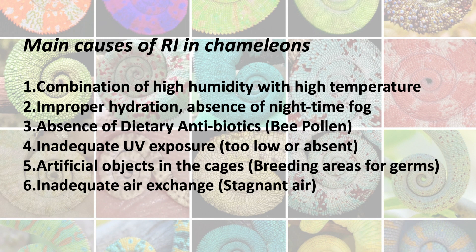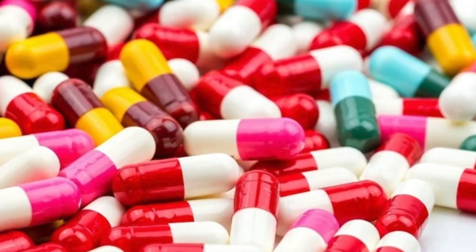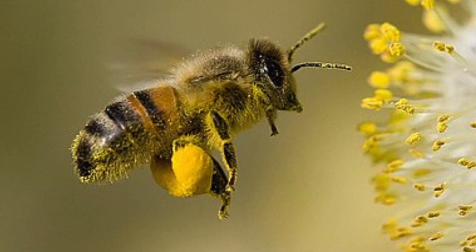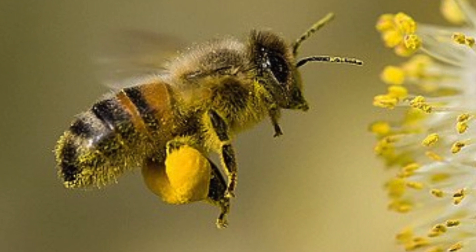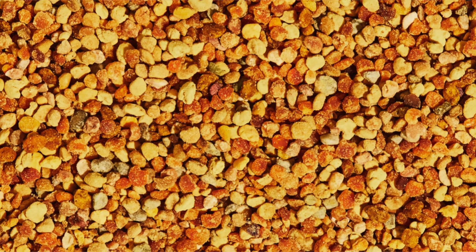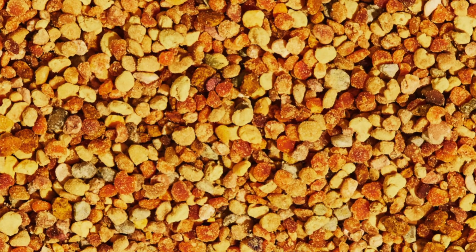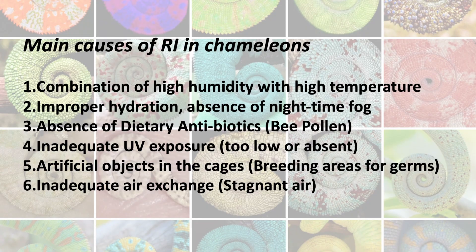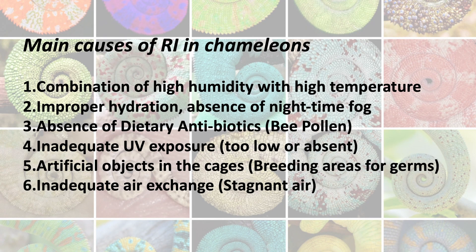The third reason is the absence of naturally occurring dietary antibiotics from bee pollen. Chameleons actually self-medicate in the wild: by eating pollinatic insects, they ingest large amounts of pollen every day. Pollen contains powerful natural antibiotics which build an antibiotic shield that kills both bacteria and fungi just after they enter the organism and before they can take hold. If pollen is not part of the captive diet, this function is absent and the chameleons are exposed to pathogens without their natural antibiotic shield.